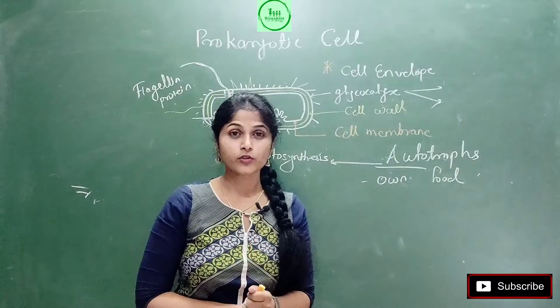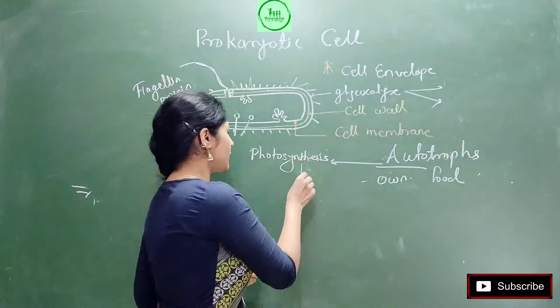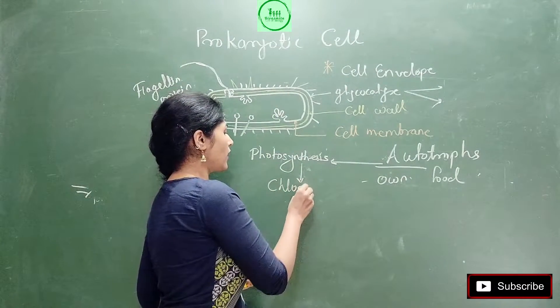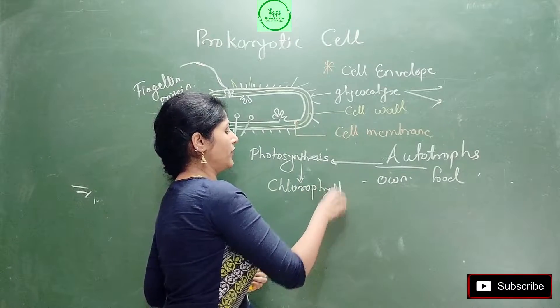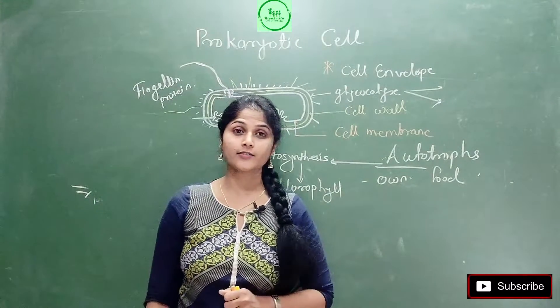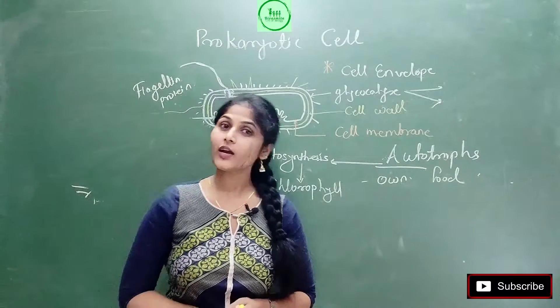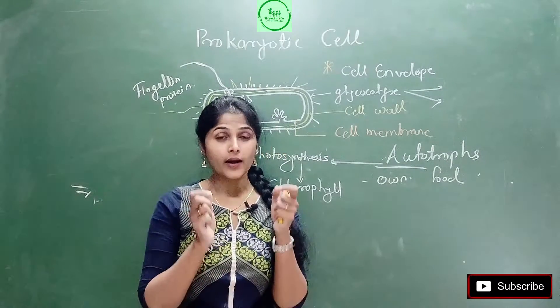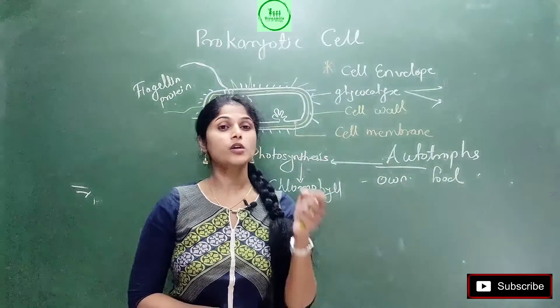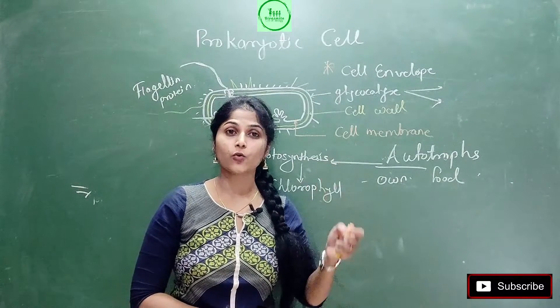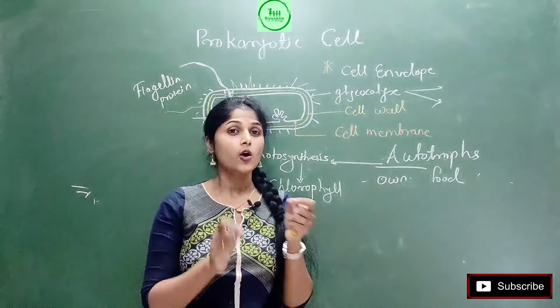And there are some bacteria who can do photosynthesis. Now think, if photosynthesis is to be done, they should have chlorophyll, right? If there is no chlorophyll, photosynthesis will not happen. Like we don't have chlorophyll, so we can't do photosynthesis. But there are bacteria in which there is chlorophyll. We call that chlorophyll bacteriochlorophyll.